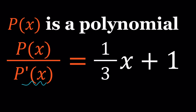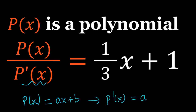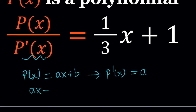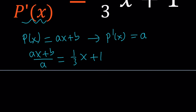What happens if P of X is linear? Then it's going to look like AX plus B, and its derivative is going to be just A, a constant. P of X over its derivative gives AX plus B divided by A, which separates into X plus B over A, and this needs to equal 1 over 3X plus 1. This won't work because we have different coefficients of X on either side. So P of X cannot be linear.